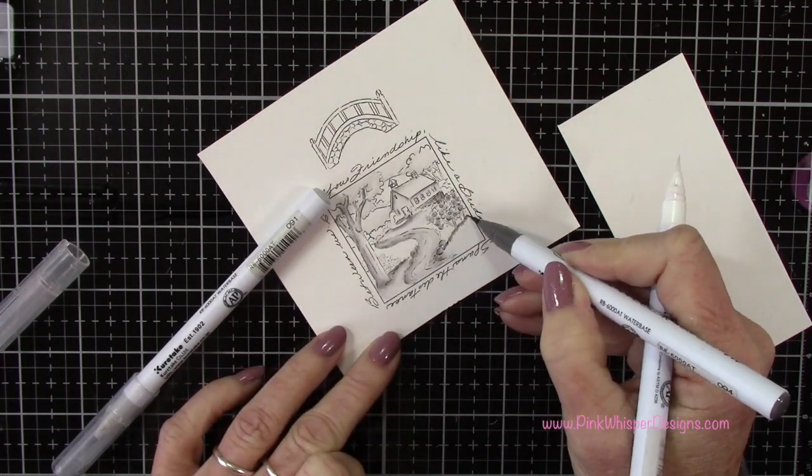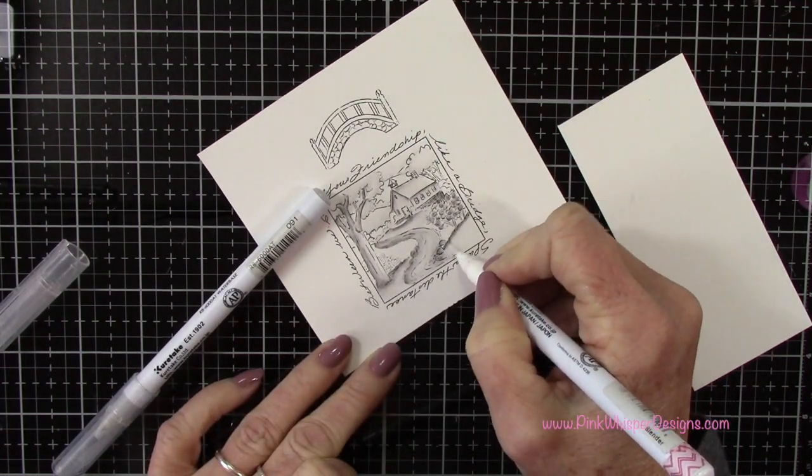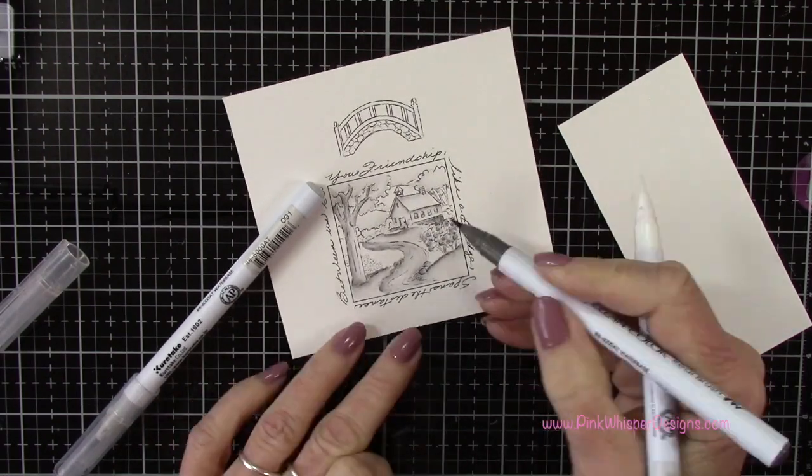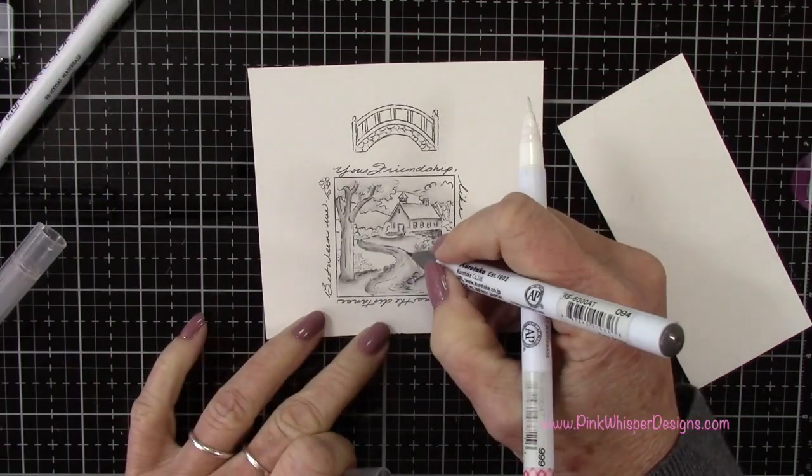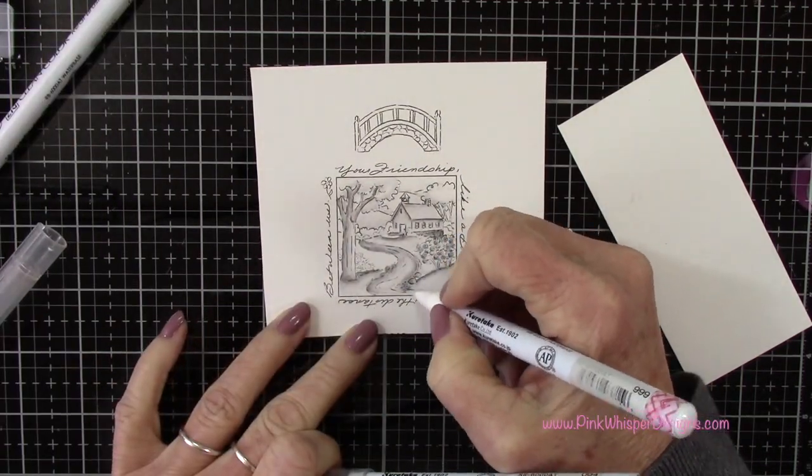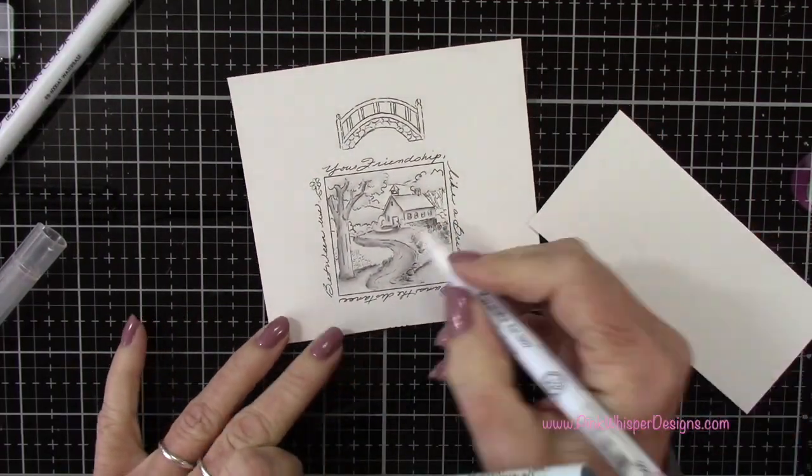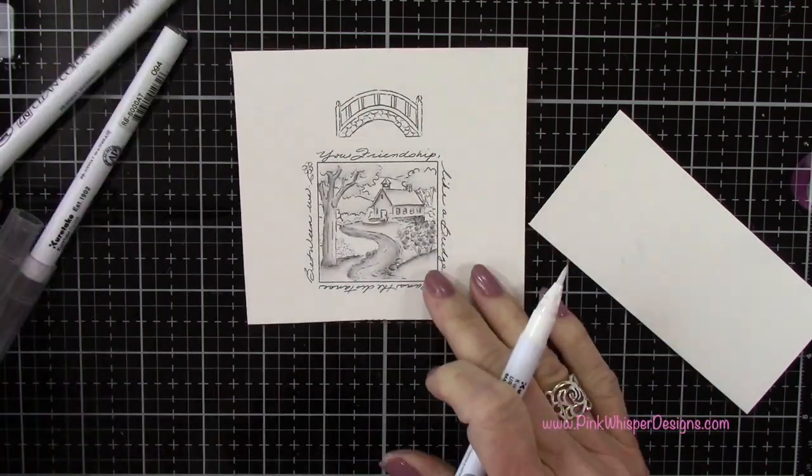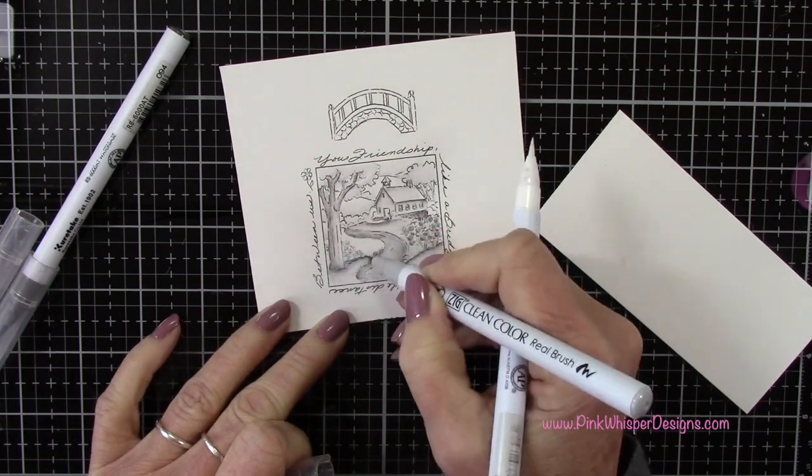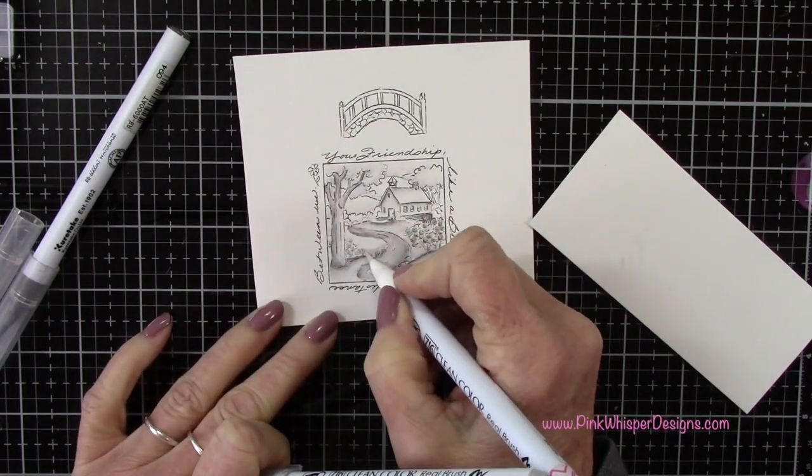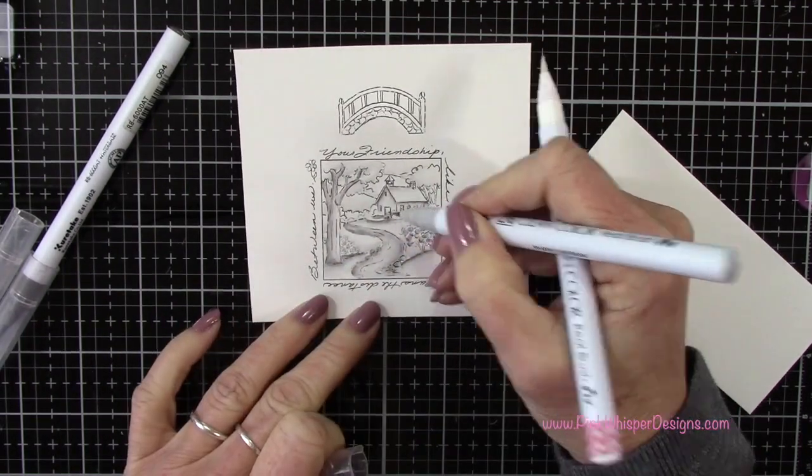I continue to color in with these grays, going with that gray, black and white palette and just adding my shadows. You could use a water brush here as well. These are water based markers so they would easily blend with a water brush and might give you a little bit of a softer look if you did use water instead.